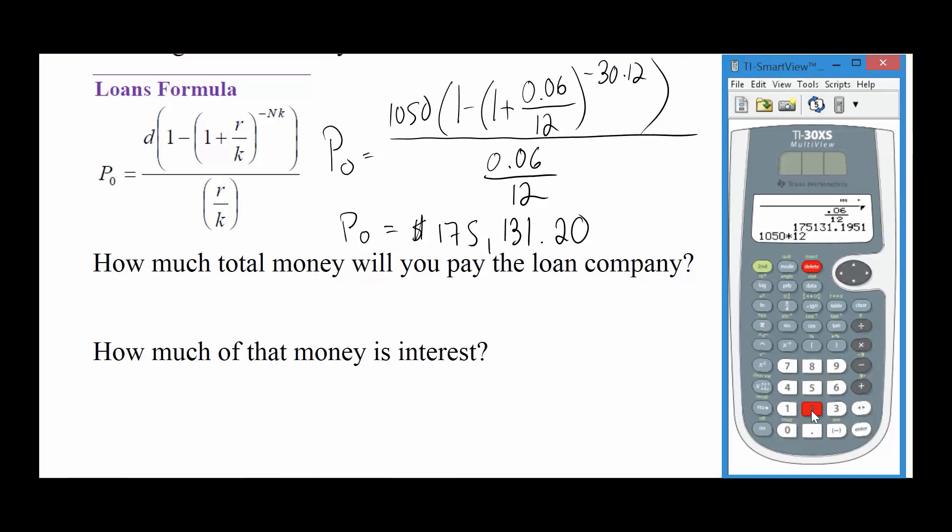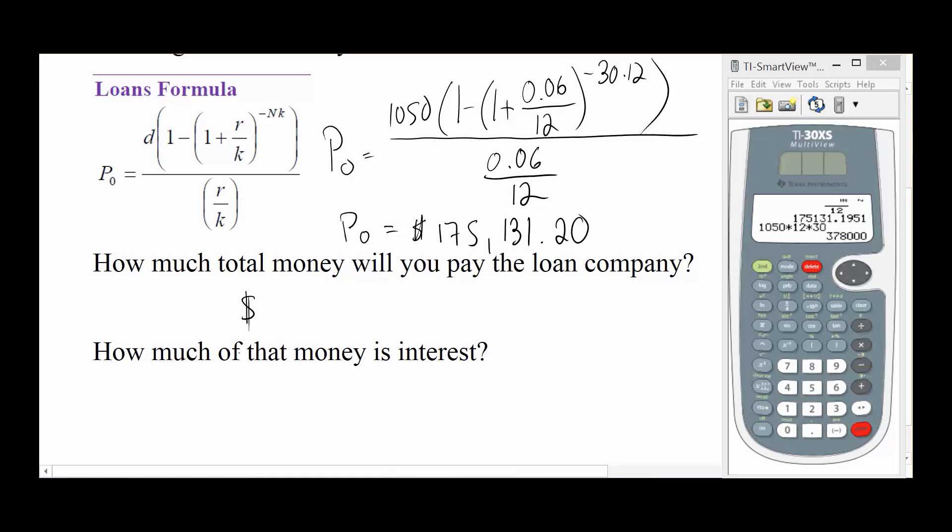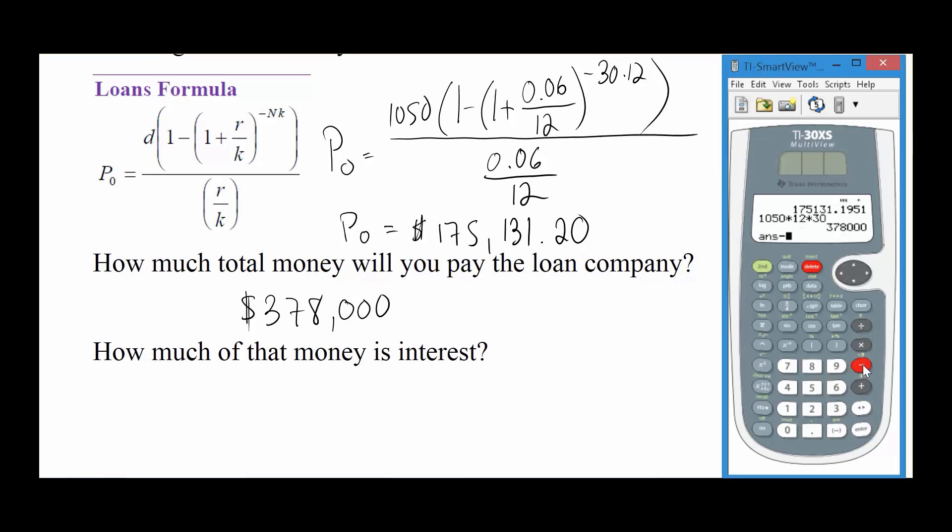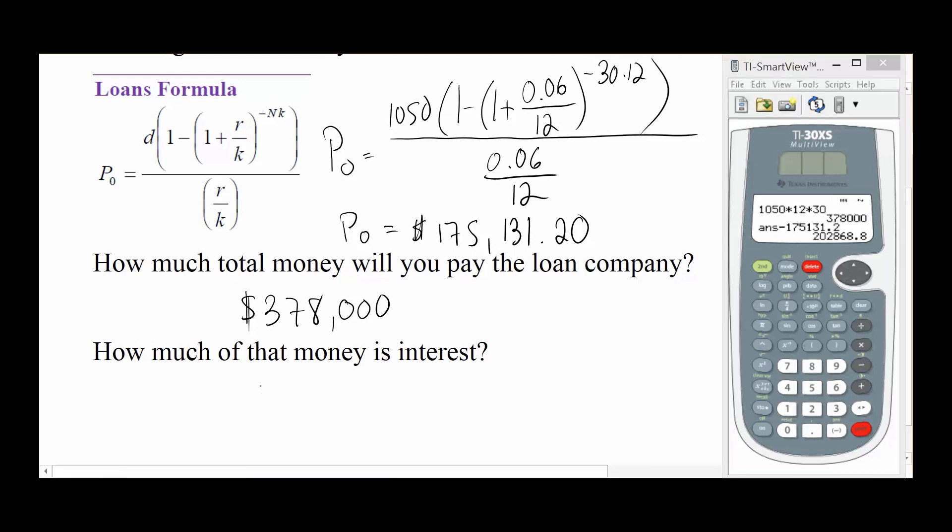So we were giving them $1,050 a month. We times that by 12 to find out how much per year and times that by 30 to find out over the life of the loan how much money we gave the bank. If we bought a $175,000 house, we gave the bank $378,000. To find out how much interest we paid, we're going to subtract off from the amount that we paid the company, we're going to subtract off the cost of the house. And we're going to realize that we paid in interest alone $202,868.80. We paid more in interest than we did for the principal amount of the house. That's outrageous.